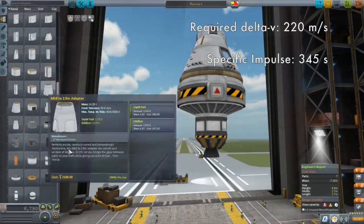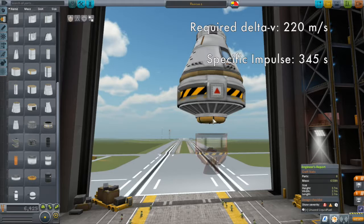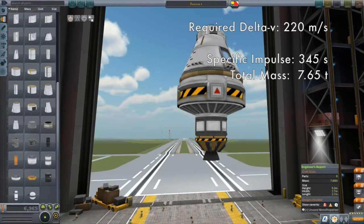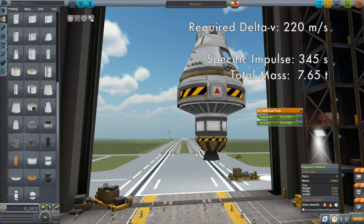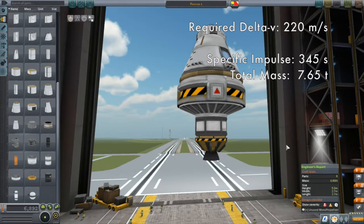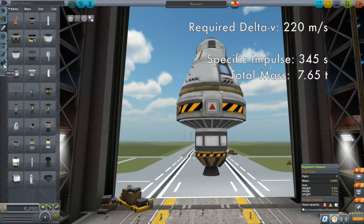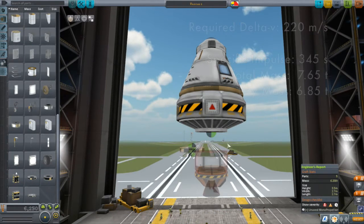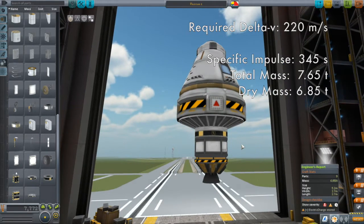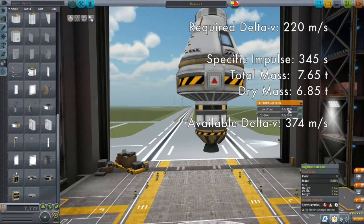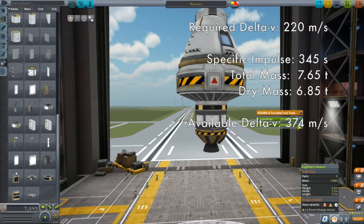We will also need the total mass of the vehicle, which turns out to be 7.65 tons. In the first episode, we learned how to calculate thrust to weight ratio. And with the 60 kilonewtons of thrust from the Terrier engine, we get a TWR of 0.8. This is plenty for orbital maneuvering. The final number we need is the mass of the vehicle with all its fuel gone, often called the dry mass. This is 6.85 tons. This gives us 374 meters per second of available delta-V. 154 meters per second more than our budget, so we should have no troubles at all having enough fuel.